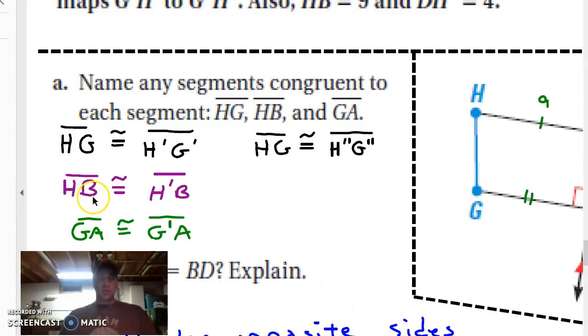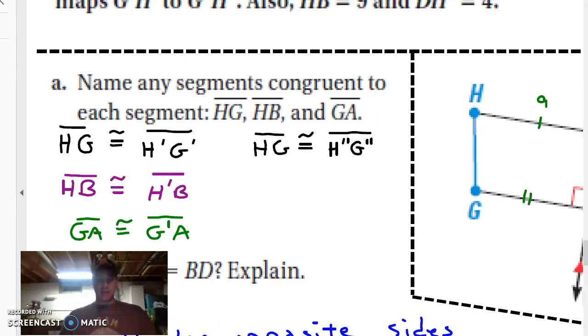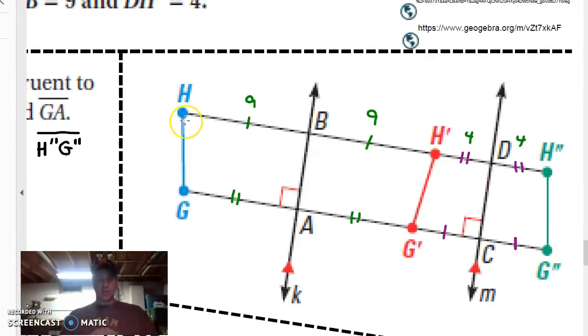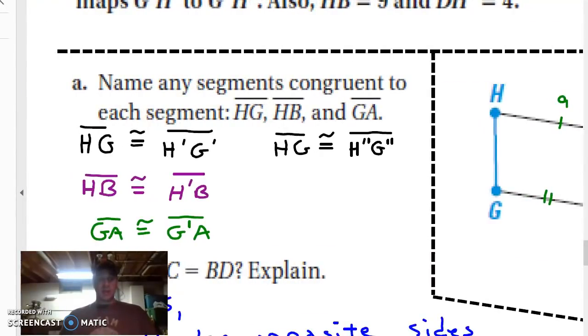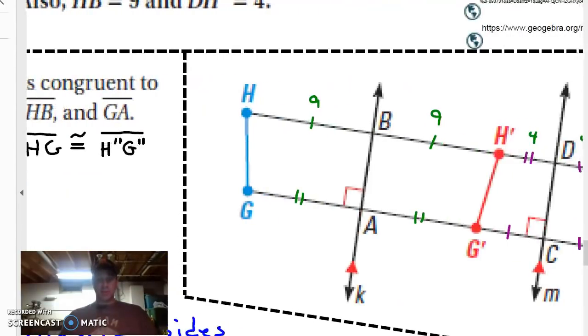The other thing that we know here is that HB is going to be congruent to H'B. And that's shown over here. This distance from H to B is 9. And so we can also say that H'B is 9 because that's purely a reflection. And then the last thing, GA and G'A are going to be the same. G to A, G'A because that's a reflection. There we don't know what that total distance is just yet.